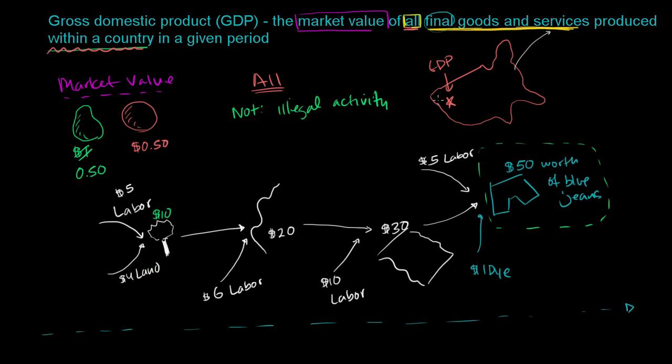So GDP, fairly simple idea. You say, what's being produced within these boundaries? We don't care who's doing the producing and what their actual nationality is, and we're going to ignore production by that nationality outside of these borders.